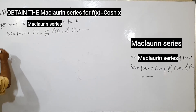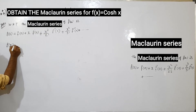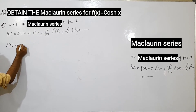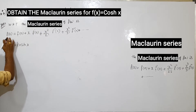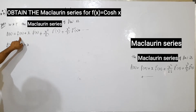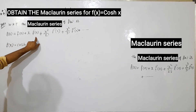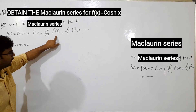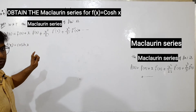So f(x) value is equals to cosh(x). Now we need to find f(0), f'(0), f''(0), and f'''(0) values.